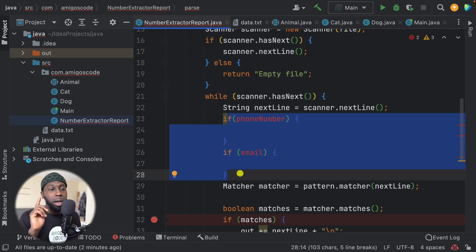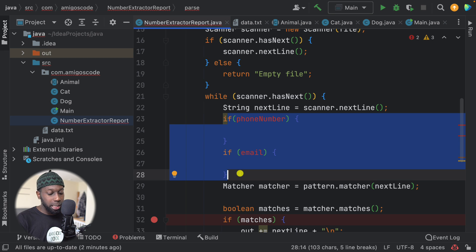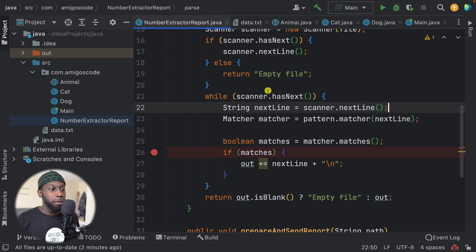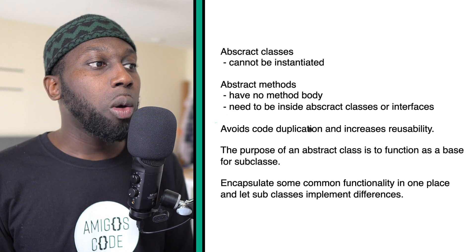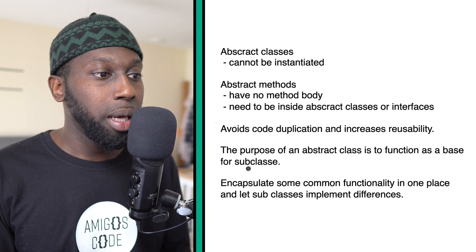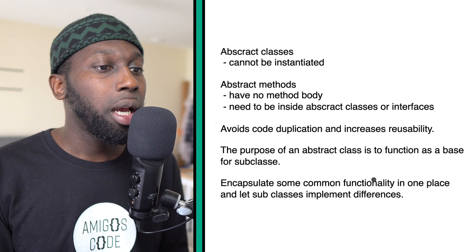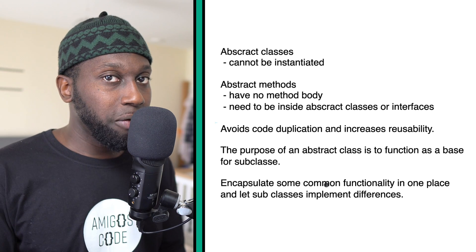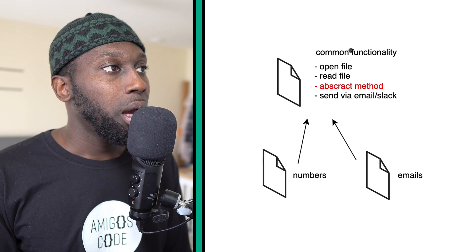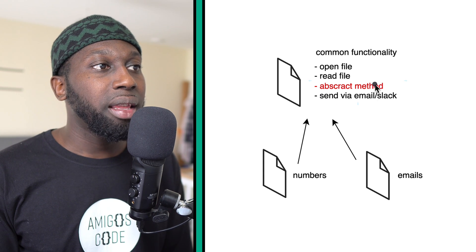And if you remember correctly from the video on solid principles, a class should be closed for modification, but open for extension. So here we are violating this rule. What we're going to do is abstract all of this - we're going to create an abstract class with common functionality, and this is what abstract classes really give us. It avoids code duplication and increases reusability. The purpose is that we can have a class that acts as a base for subclasses, encapsulating common functionality in one place and letting subclasses implement the differences.